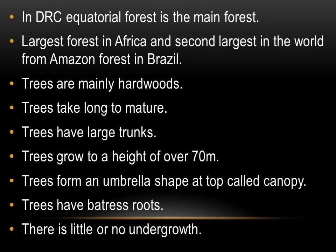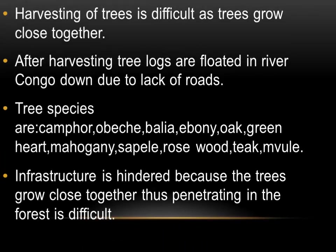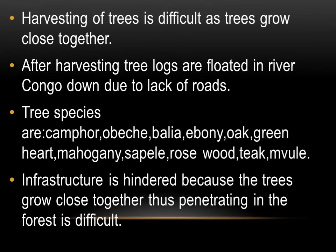There is little or no undergrowth. Undergrowth means the grass that grows on the surface of the ground. There is little or no undergrowth because the canopies cover the ground, preventing sunlight from reaching the soil. Harvesting of trees is also difficult as trees grow very close together, making it very hard to penetrate inside the forest.